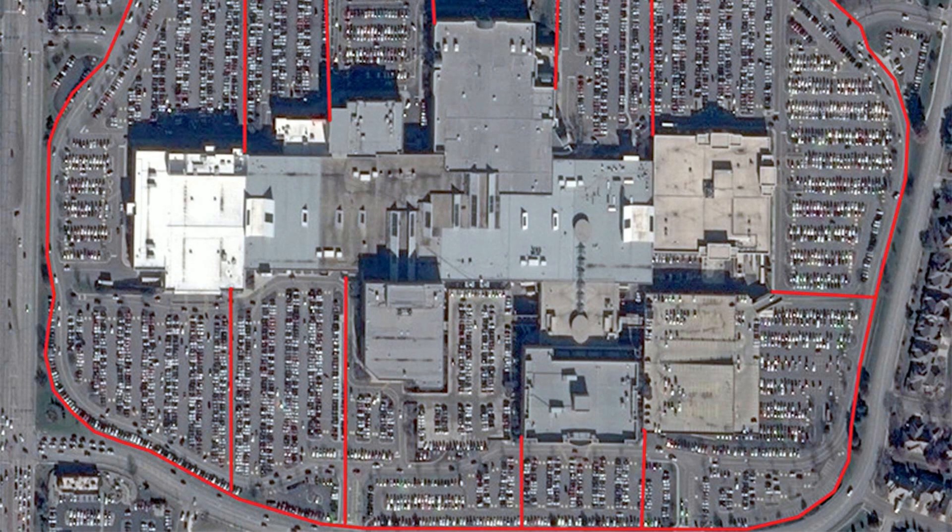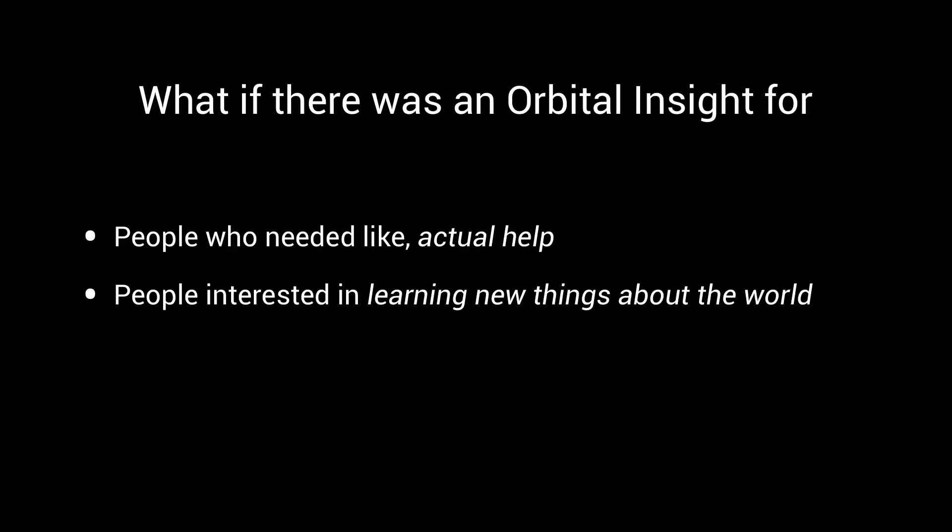In the U.S. Retail Traffic Index by RS Metrics, analysts monitor the number of cars in retail parking lots in order to estimate the quarterly performance of big-box stores before those results have been released. With enormous amounts of money to be made in the trade of such information products, this type of understanding about the forces shaping our world remains very far from being a public good. We wondered: what if there were a public tool for everyday people, activists, and scientists?